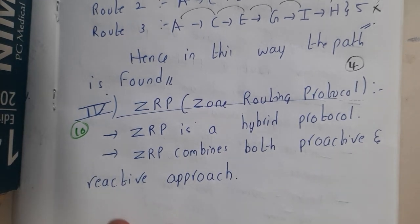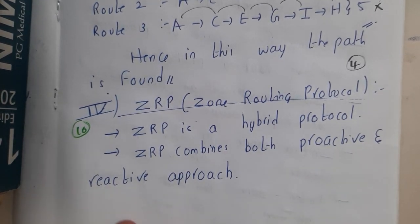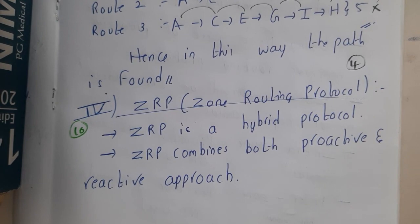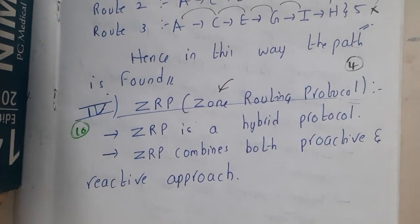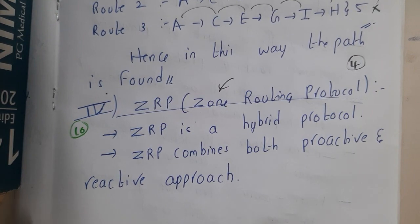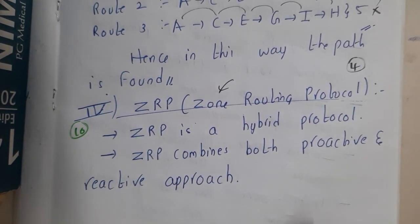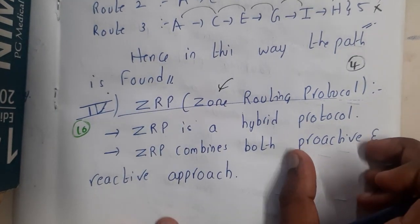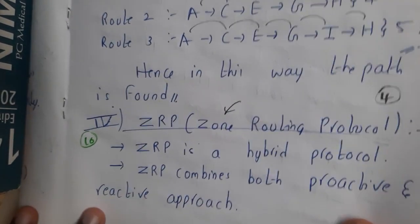Hello guys, we are back with our next lecture. In this lecture, let us go through the ZRP routing algorithm or protocol. Basically, this works on the concept of zones. ZRP is a hybrid protocol — it is a combination of a proactive and reactive approach.